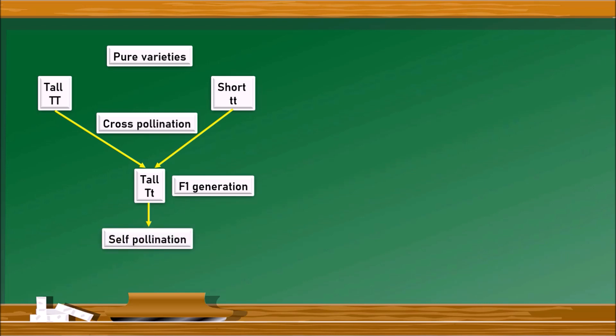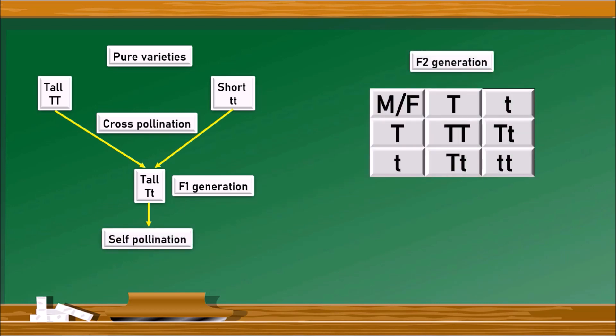Now let us self-pollinate the F1 generation to get the F2 generation. Observing the checkerboard of F2 generation, the gametes formed from F1 plants — which have factors capital T and small t — are two types: capital T and small t. When these gametes randomly fuse, they may combine as capital T capital T, capital T small t, and small t small t.